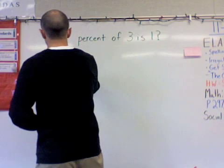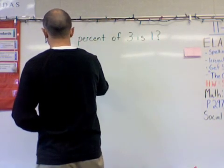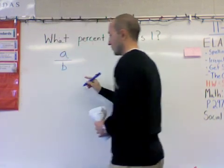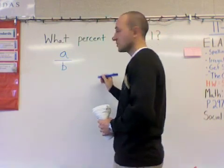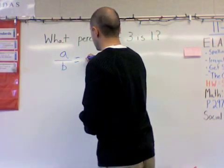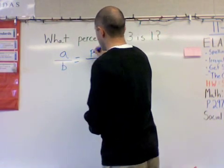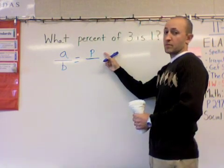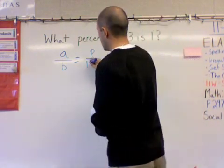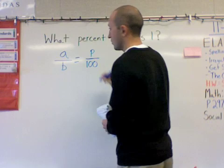And I set it up like this. It's going to be A over B. B is going to stand for our base. Will be equal to P, P standing for percent. Remember that's what we want to find. And percents are always over 100.